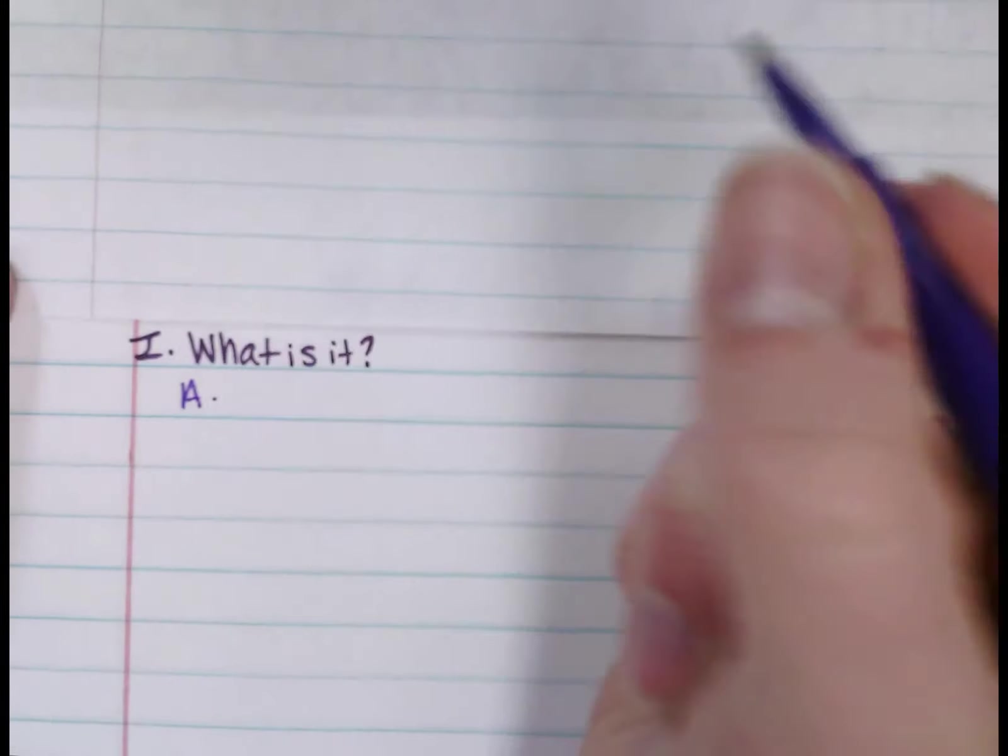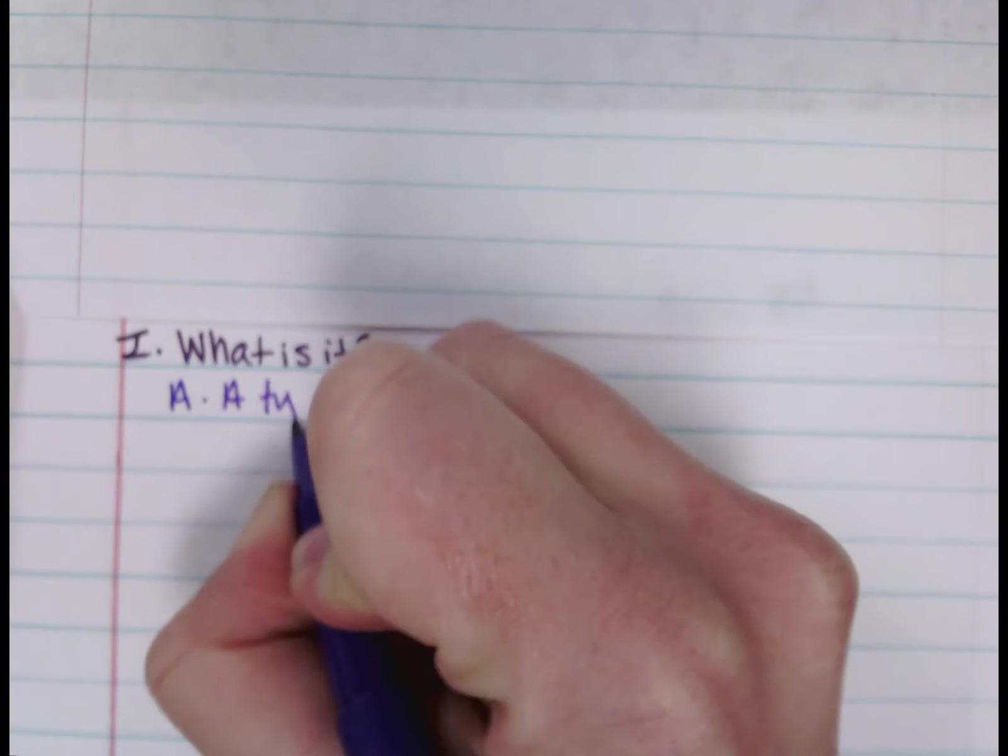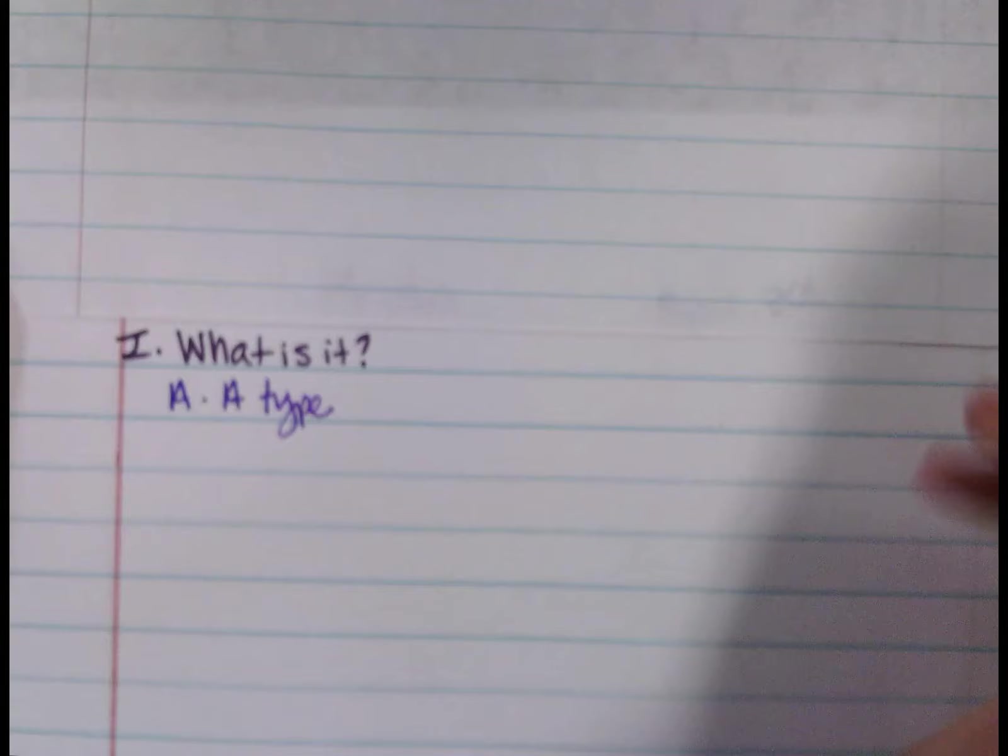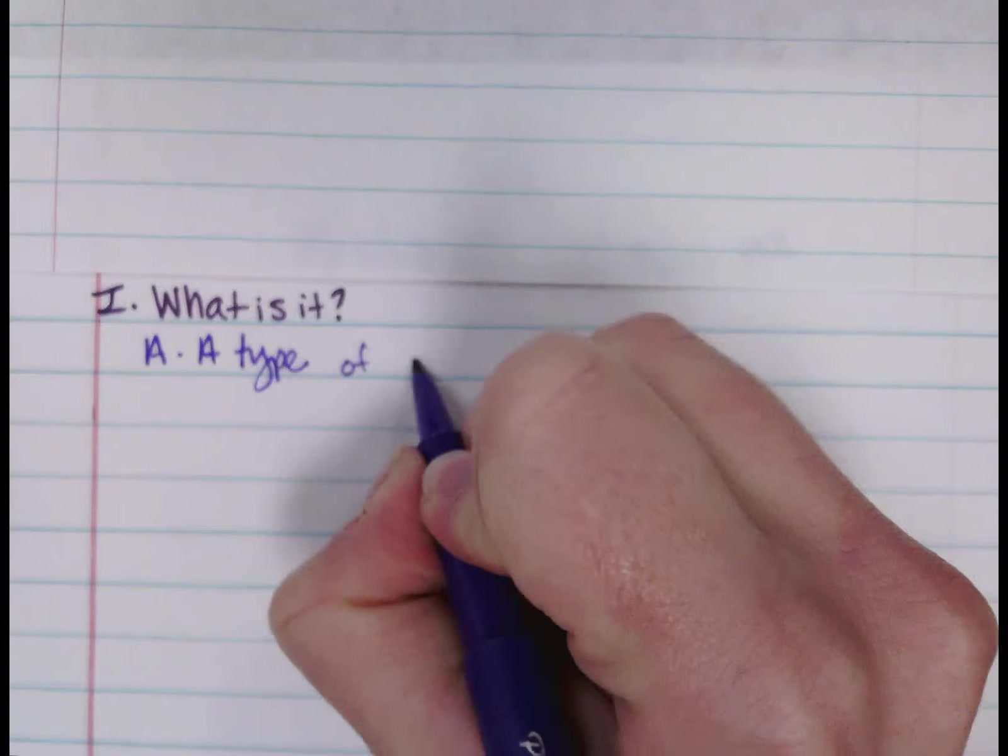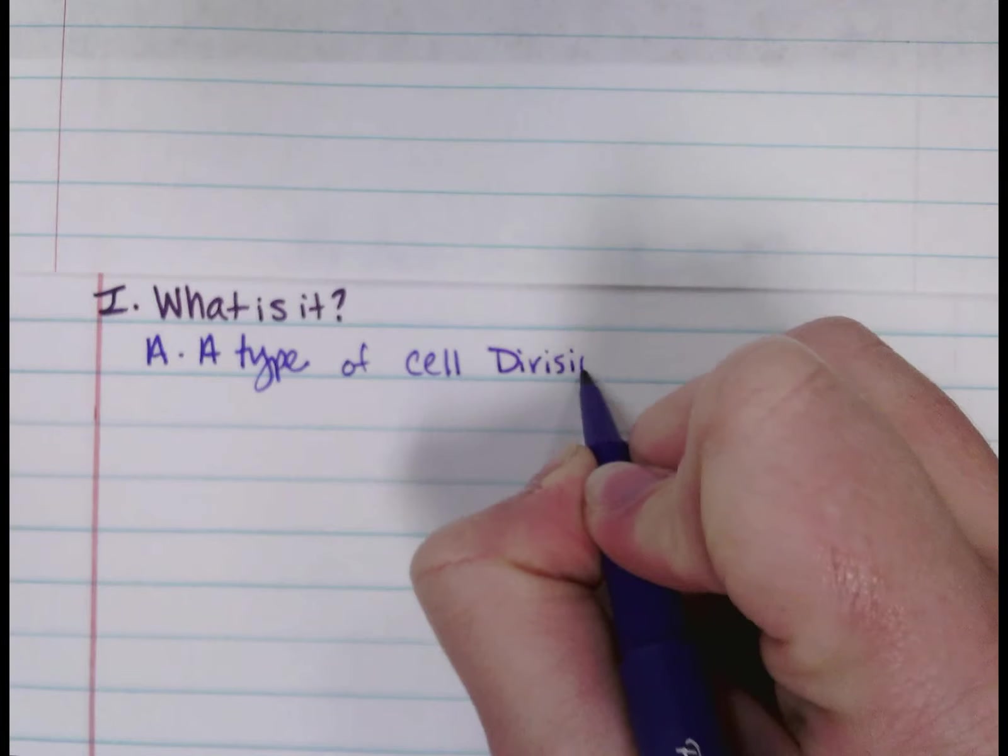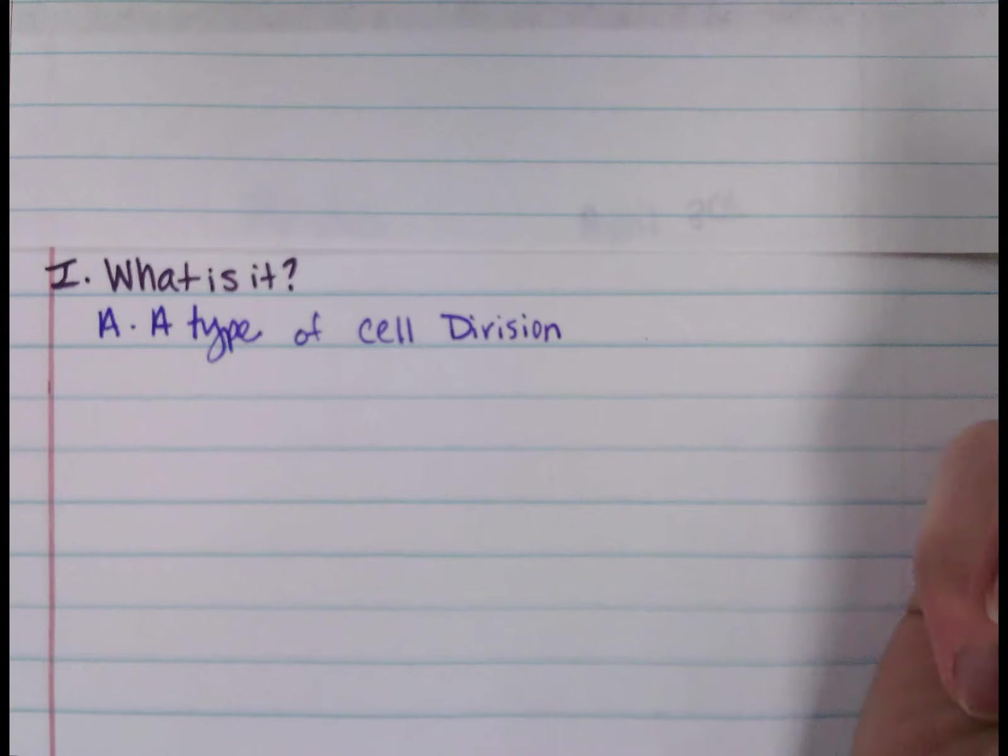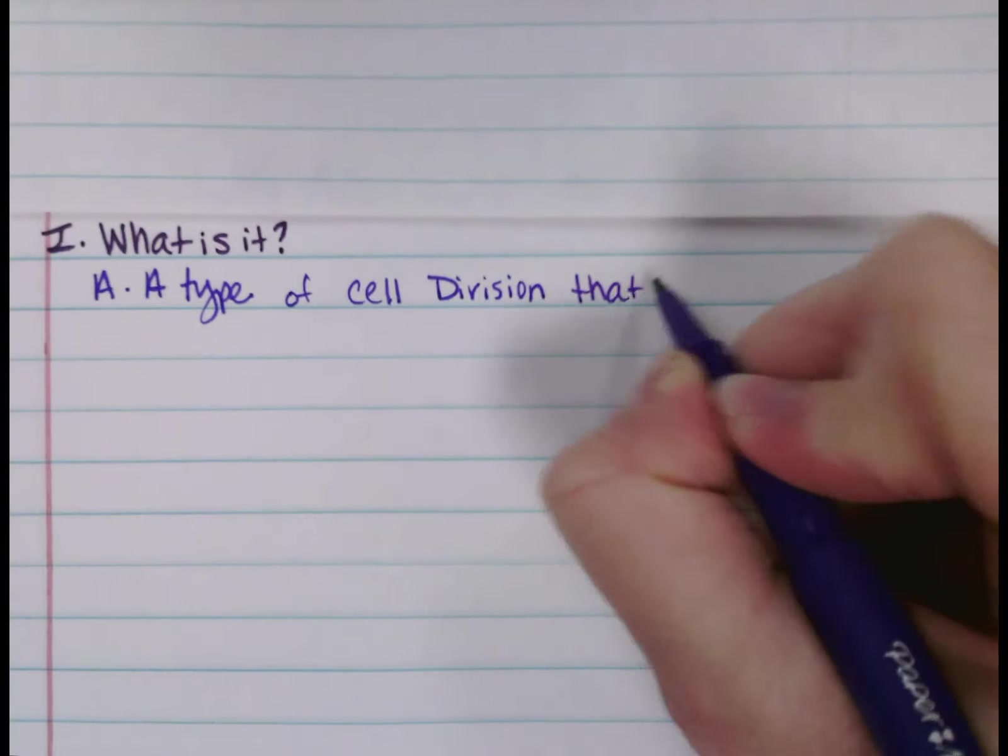So the first one, what exactly is meiosis? It is a type of cell division. We're still talking about cells dividing. It's a type of cell division that produces four cells.